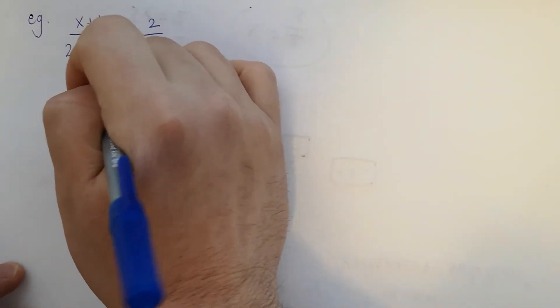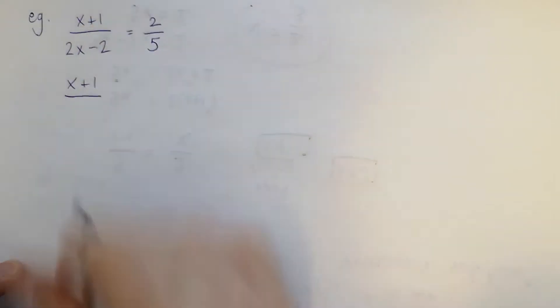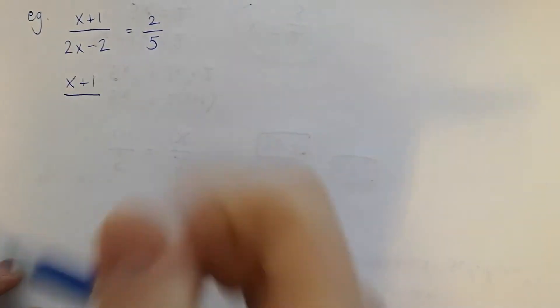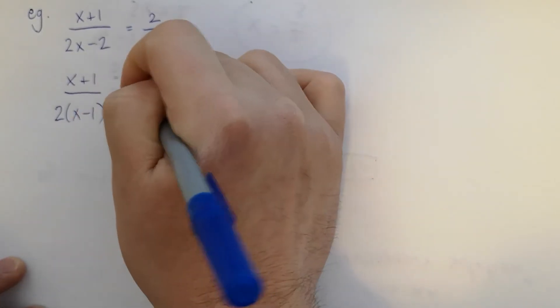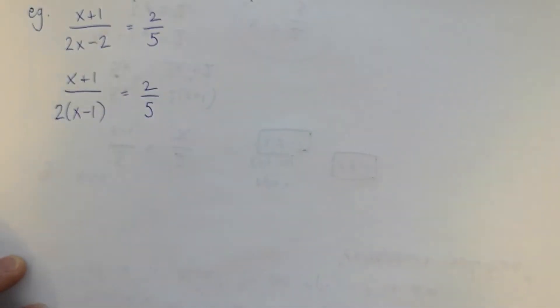Step one is to factor. So I can factor a two out of this denominator. There's nothing I can do to the fraction on the right.